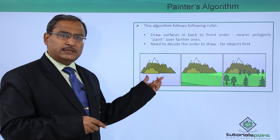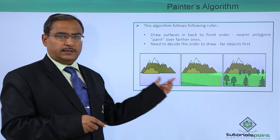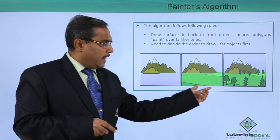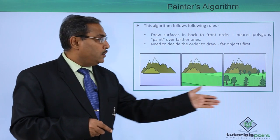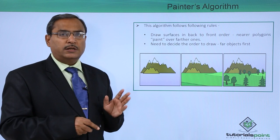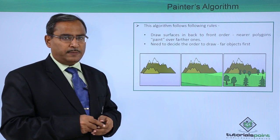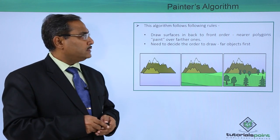Here you see we drew this mountain at first, then we drew this landscape there and then we drew this particular trees in the next time. What is happening? If we can determine this order, then it is good enough, otherwise it might be a problematic one for us.